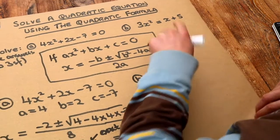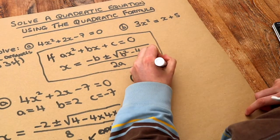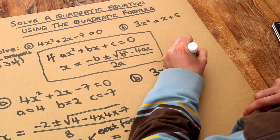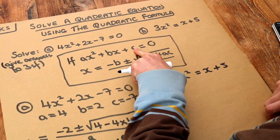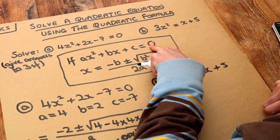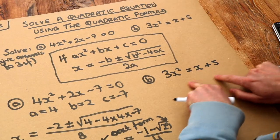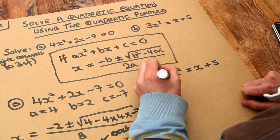What about the second one? We've got 3x squared equals x plus 5. Now it's not currently in this form. We need to get everything on one side and zero on the other side, so let's just move the x and the 5 over to the other side by subtracting them.